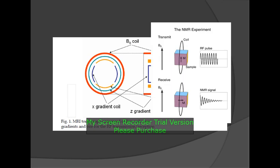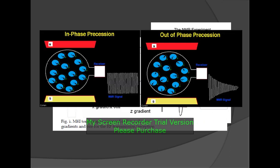This is the experiment of the NMR. There is the transmit and the receive pulse. When an RF pulse is given having equal amplitude, the NMR signal is received having unequal — that is, decreasing — amplitude. This figure shows in-phase precession where we receive the NMR signal, and there is out-of-phase precession where we also receive the NMR signal.